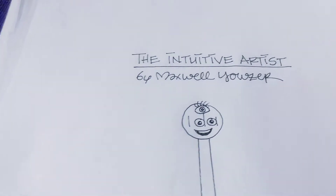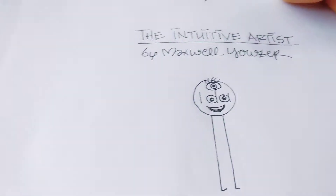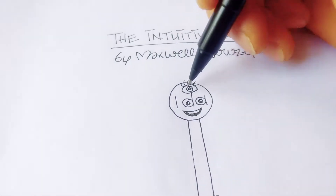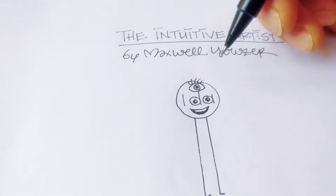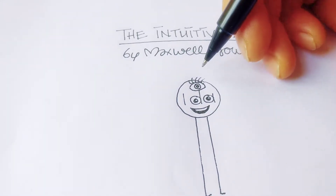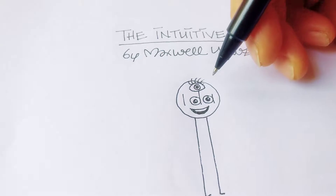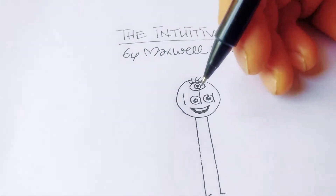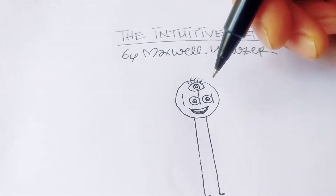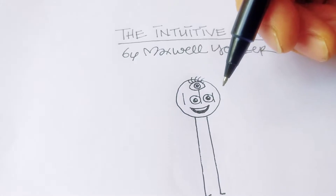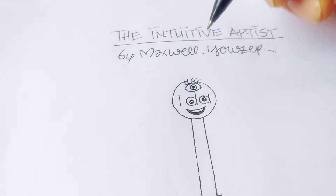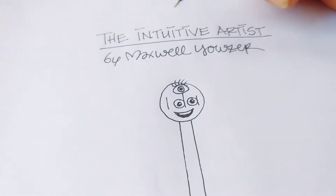Yesterday I talked about the intuitive artist, and basically what that is is an artist who has intuition. Here you can see I drew a third eye representing intuition — just something that artists feel. They can't really see it, but they just feel it and basically go with it. They have this amazing ability to act on something without fully seeing it. But anyway, that's the intuitive artist.